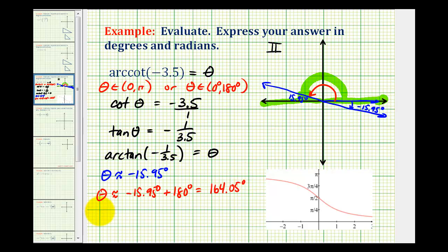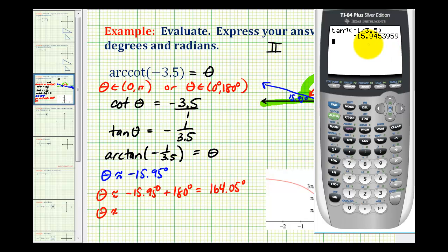And then for the angle in radians, we could convert this to radians or we can go back to the calculator. Change the mode to radians, so press mode, highlight radian, press enter. Go back to the home screen and press second tangent, again negative one divided by 3.5.